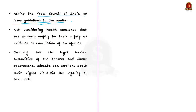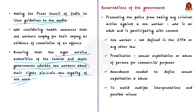The next recommendation is sensitizing the police and other law enforcement agencies about the rights of sex workers to live with dignity. The panel also recommended that the Press Council of India issue guidelines to the media so that they don't reveal the identities of sex workers while reporting arrests, raids, and rescue operations. The panel further recommended that legal service authorities of central and state governments educate sex workers about their rights with regard to the legality of sex work.